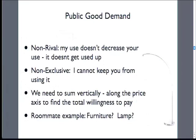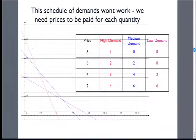Now let's do the other thing. The roommates are going to shop for something that they're going to share — it's non-rival and non-exclusive. If you remember the categories from last time, we're talking about public goods. My use doesn't decrease your use; it's non-rival. Non-exclusive means I can't stop you from using it. So now we're going to sum vertically. In my roommate apartment example, we're going to buy a lamp for the living room, or chairs for the table — some sort of furniture we can all use and share together.